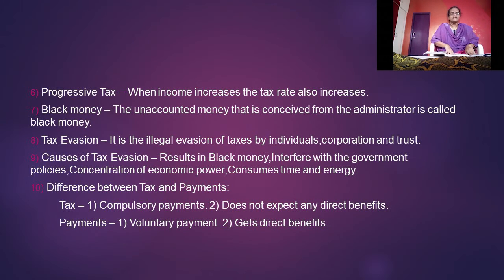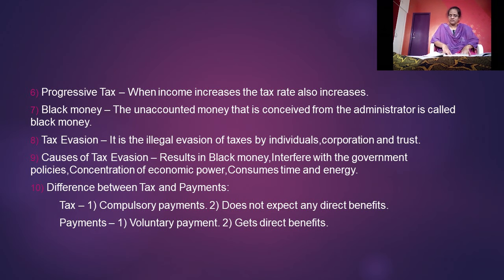What is progressive tax? When income increases, the tax rate also increases — this is known as progressive tax. What is meant by black money? The unaccounted money that is concealed from the tax administration is called black money. What is tax evasion? Tax evasion is an illegal evasion of taxes by individuals, corporations and trusts.